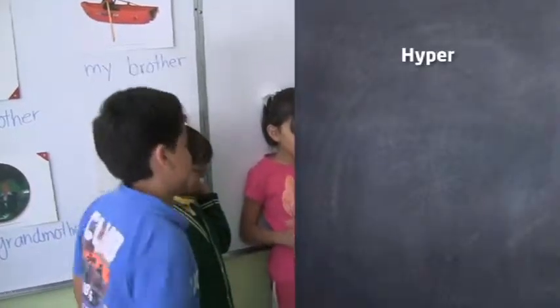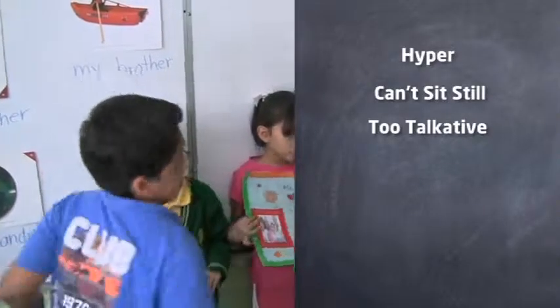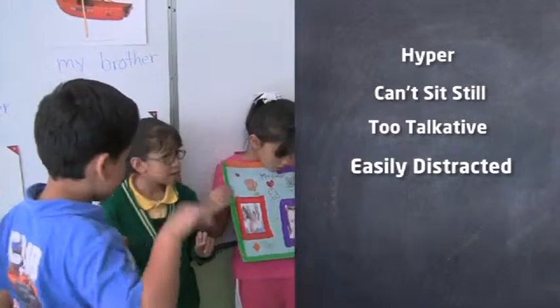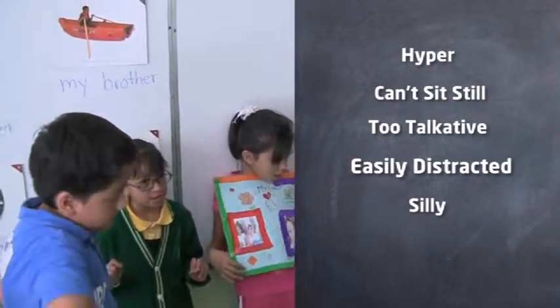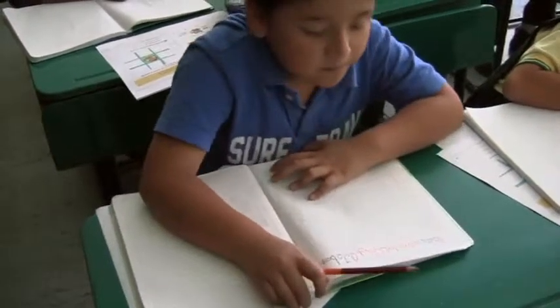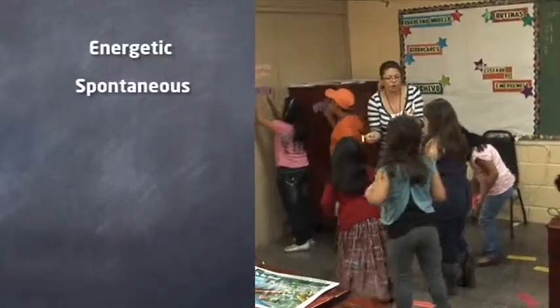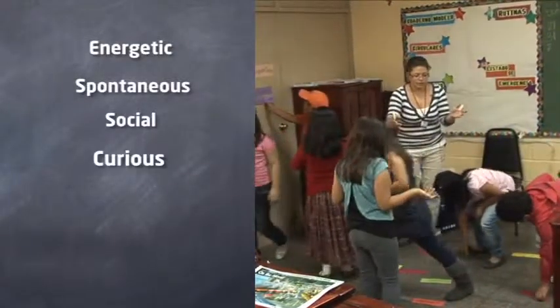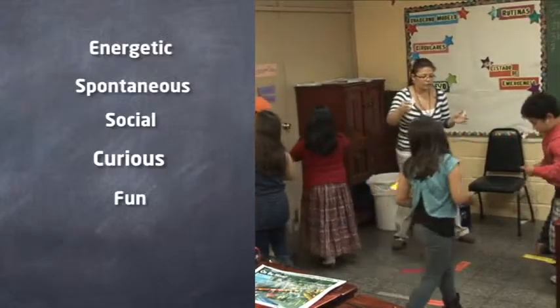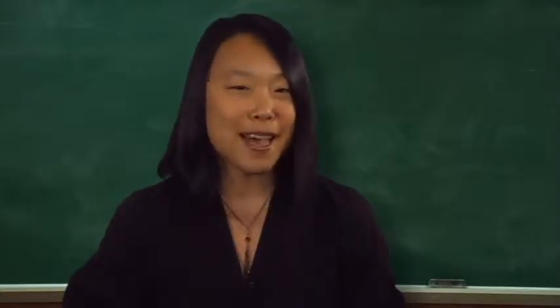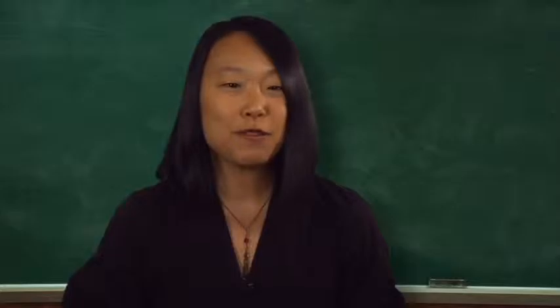on a bad day I probably thought young learners are hyper, can't sit still, too talkative, easily distracted, and just plain silly. But on a good day, I probably thought young learners are energetic, spontaneous, social, curious, and fun. Whether it is a good day or a bad day, the descriptions reflect the same characteristics of young learners.